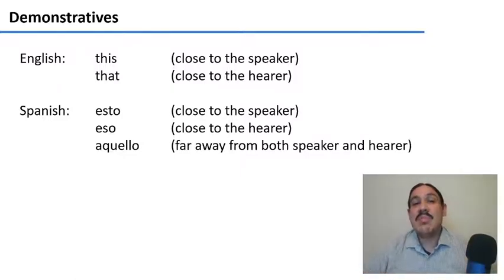We also have demonstratives, which are words that help us find something in physical space or in psychological space and time. For example, the words this and that in English and the plural equivalents, these and those, help us locate something.